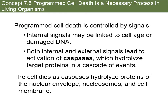Programmed cell death doesn't happen randomly — it's a very controlled process driven by signals. Internal signals may be linked to cell age or damaged DNA; as a cell ages or if its DNA is damaged, it activates a signal. Both internal and external signals lead to the activation of caspases, which are proteins and enzymes that hydrolyze target proteins in a cascade of events, starting a waterfall of reactions causing apoptosis. Cell death occurs as caspases hydrolyze proteins of the nuclear envelope, nucleosomes, and cell membrane, essentially causing the cell to burst.